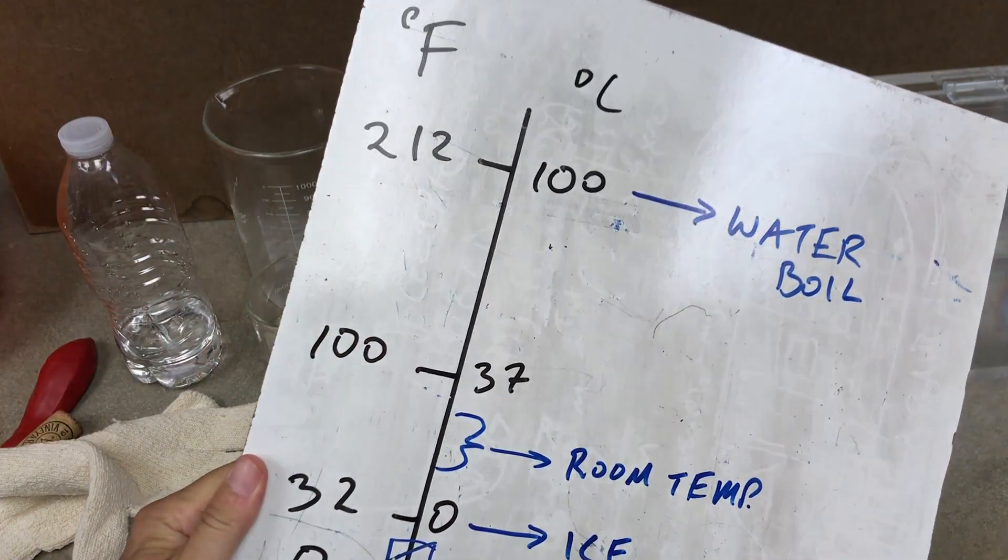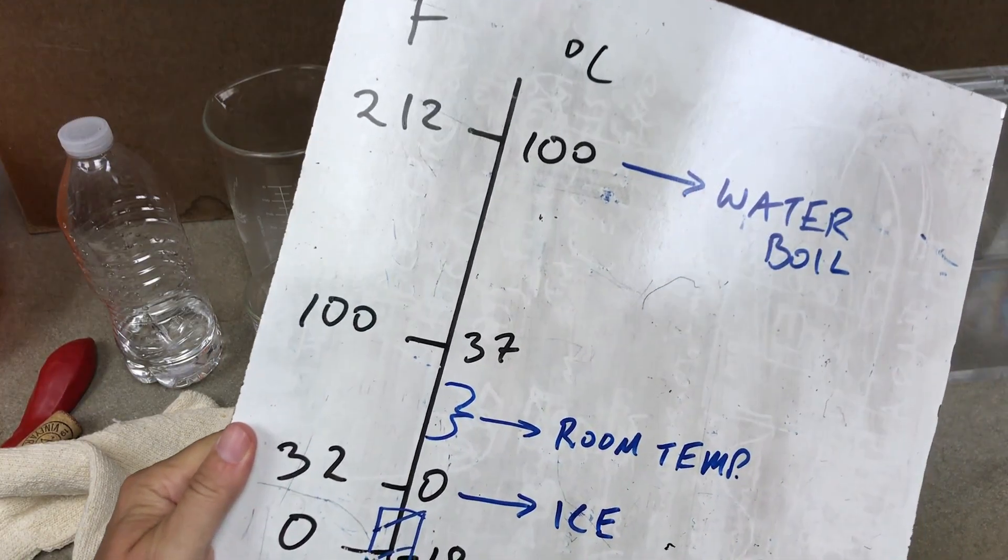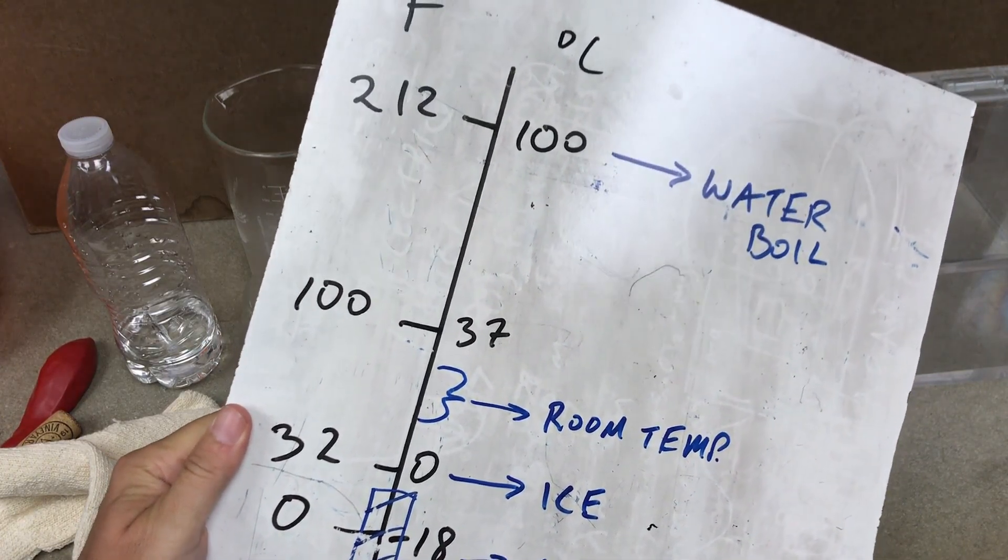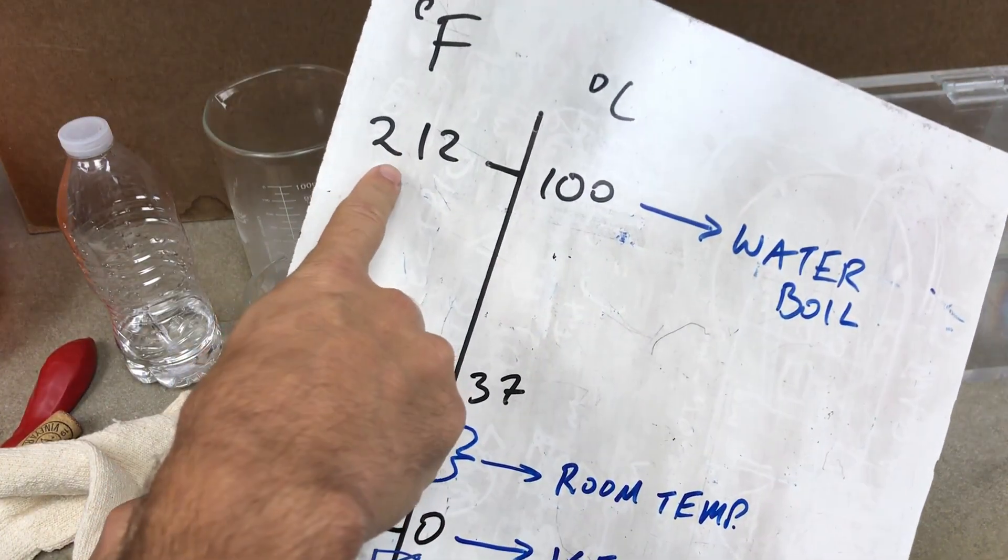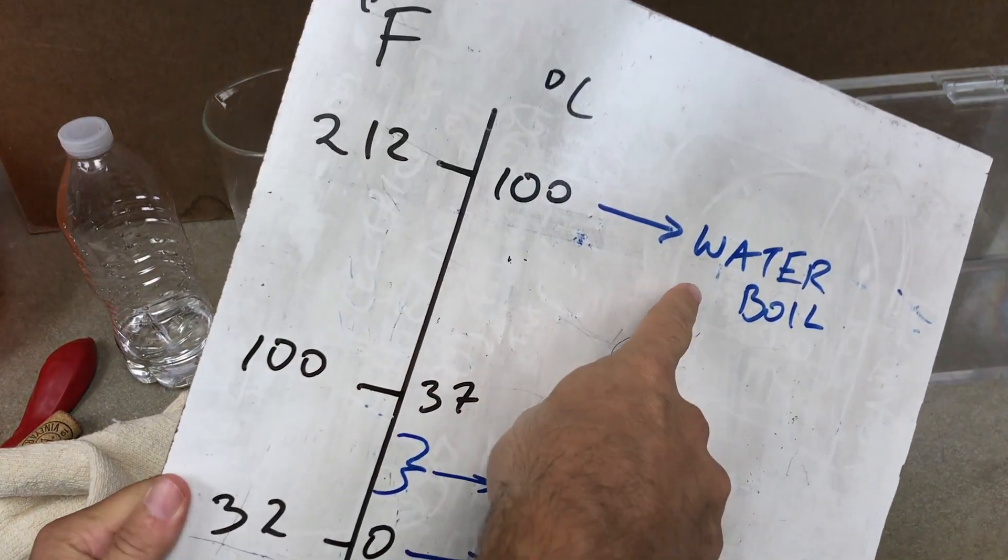Now Americans use Fahrenheit and other people use Celsius. Really in this case metric's better, but Celsius isn't that much better because you don't really break it into division. So here we have start at the high temperature of 212 Fahrenheit or 100 Celsius. That's where water boils.